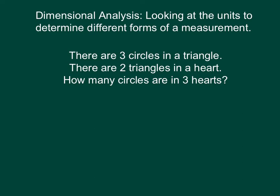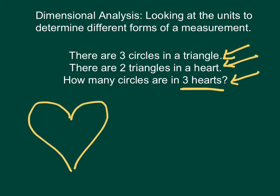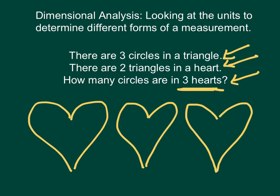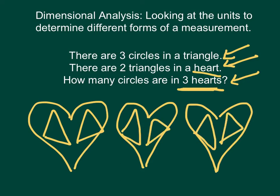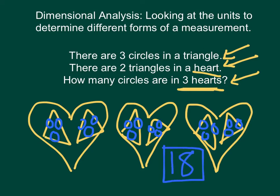Now that we understand fractions, we can talk about dimensional analysis. Dimensional analysis is when we look at the units to determine different forms of a measurement. You already know how to do this — it's actually pretty simple. Let's imagine we have three circles in a triangle, and two triangles in a heart. I want to know how many circles are in three hearts. Starting with three hearts, each heart has two triangles, and each triangle has three circles. Drawing it all out gives us three, six, nine, twelve, fifteen, eighteen — so there are eighteen circles in three hearts.